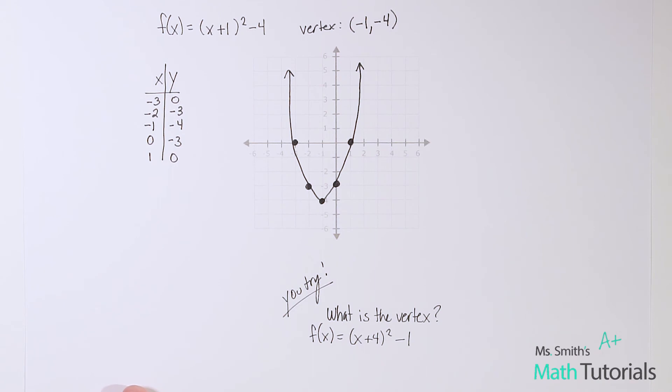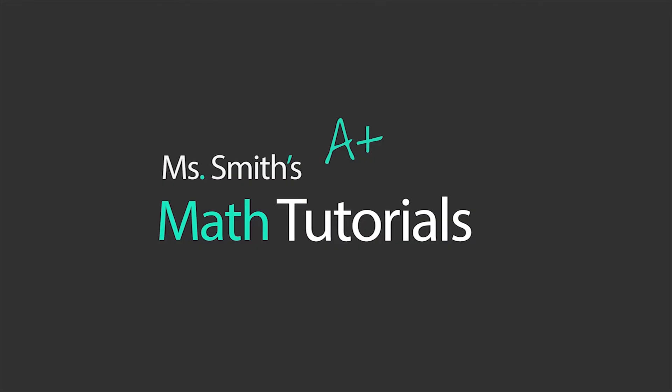So I'm going to give you guys one to try now. I want you to tell me what is the vertex. So I've given you a quadratic in vertex form. Y equals or f(x) equals (x+4)² minus 1. So you just in a single point, an x, y point, tell me what is the vertex. I will post the answer in the video description below. This has been Ms. Smith's Math Tutorials.